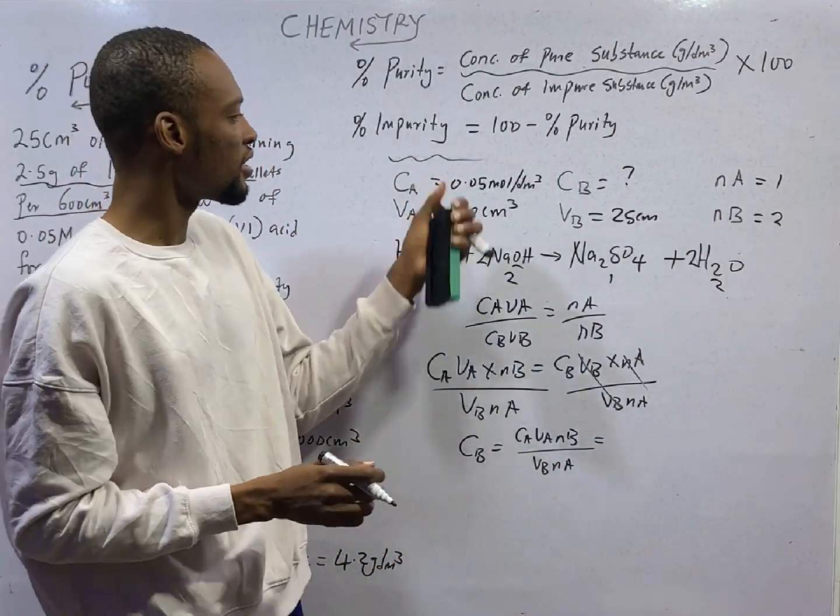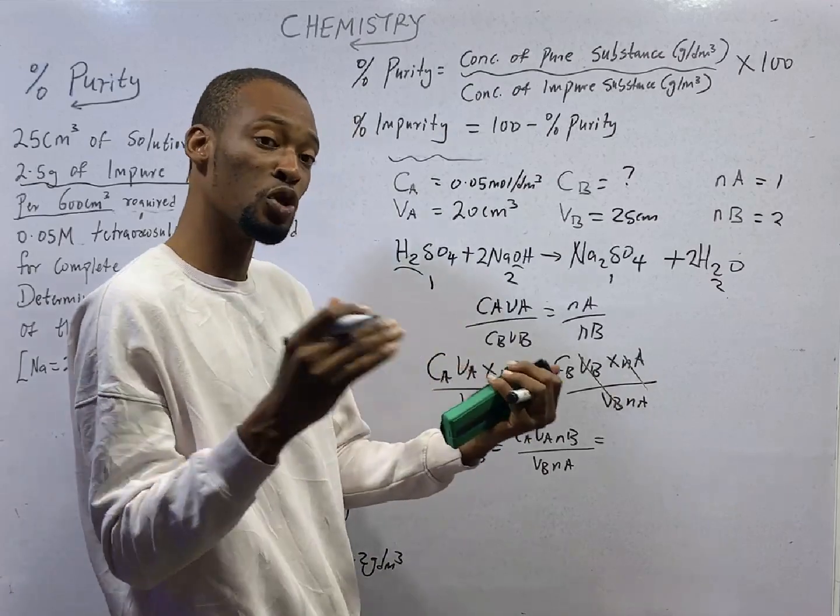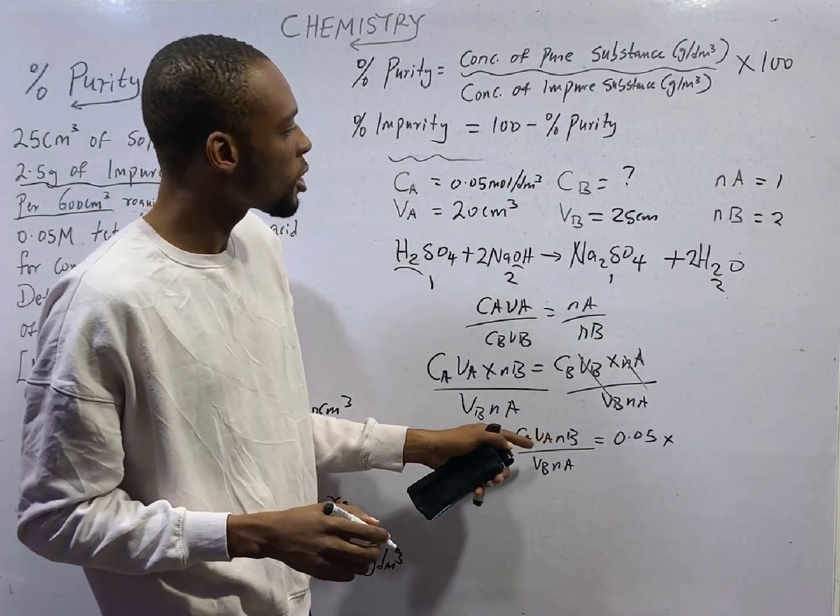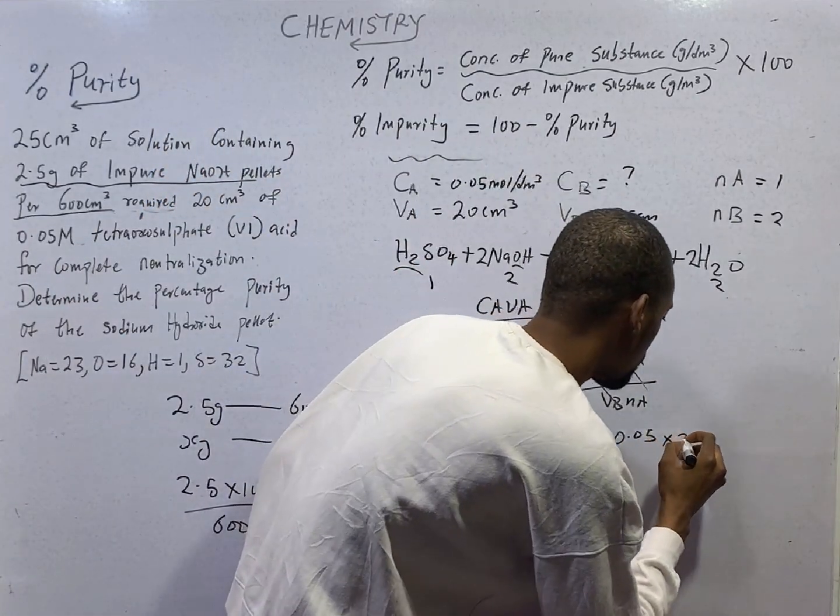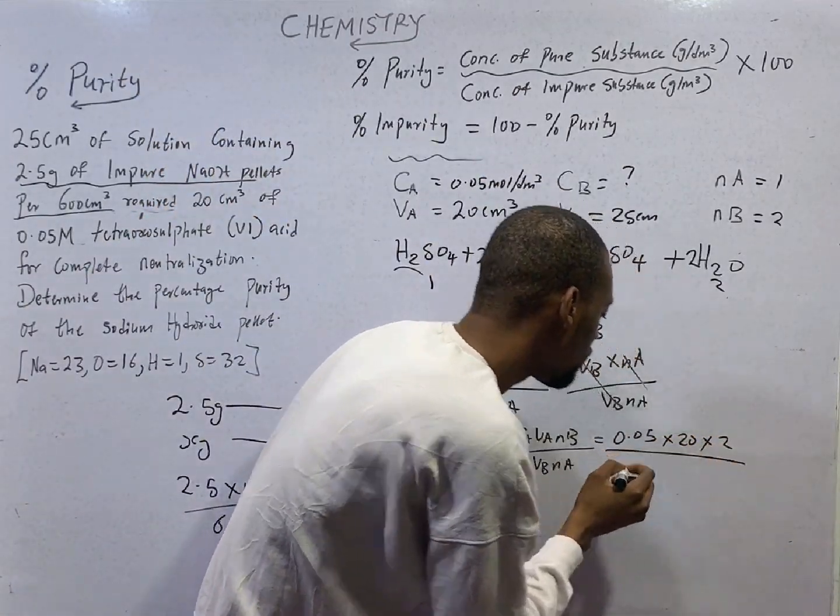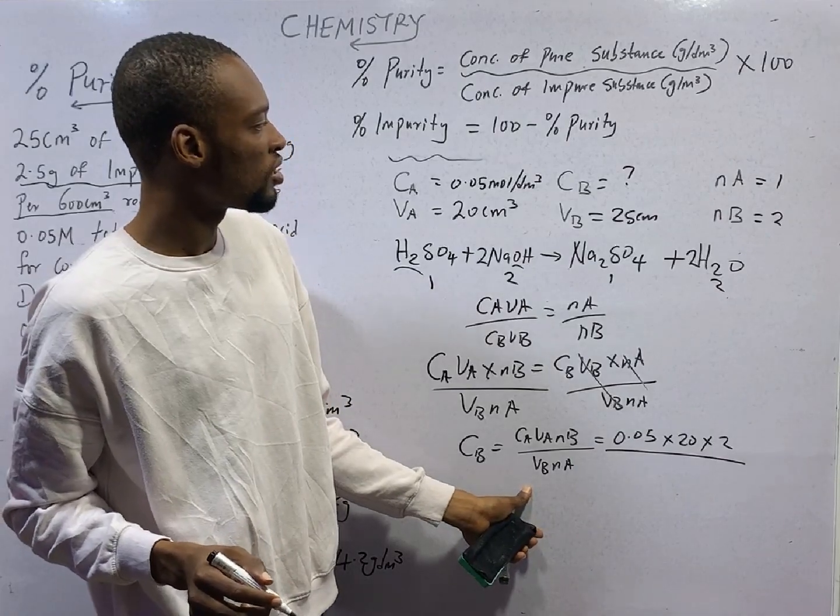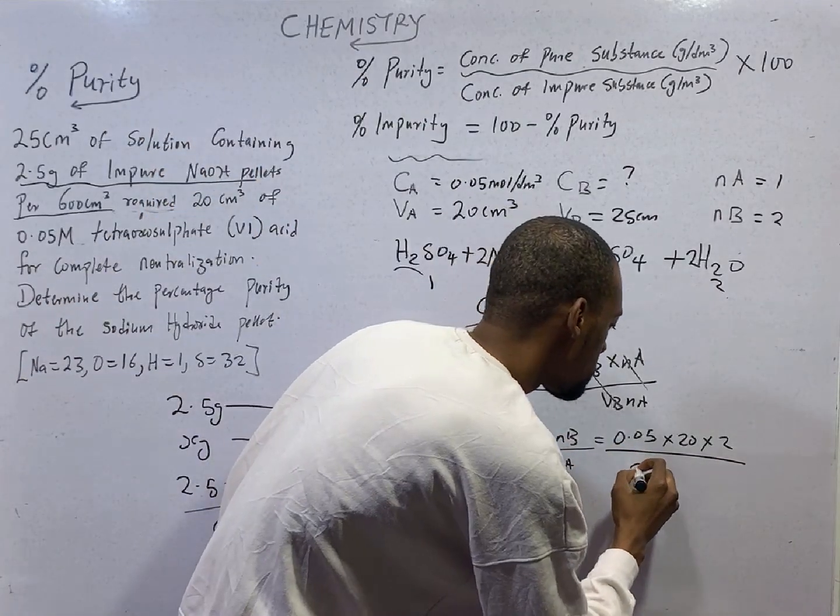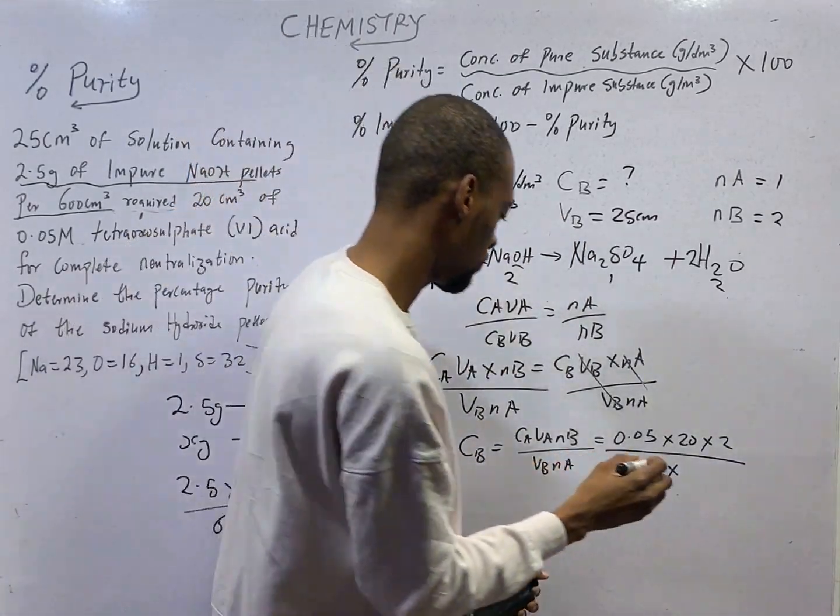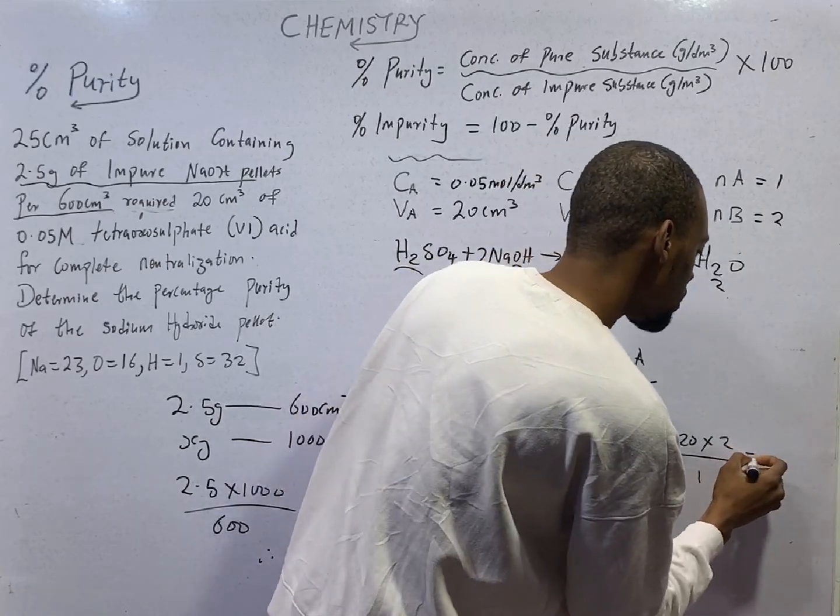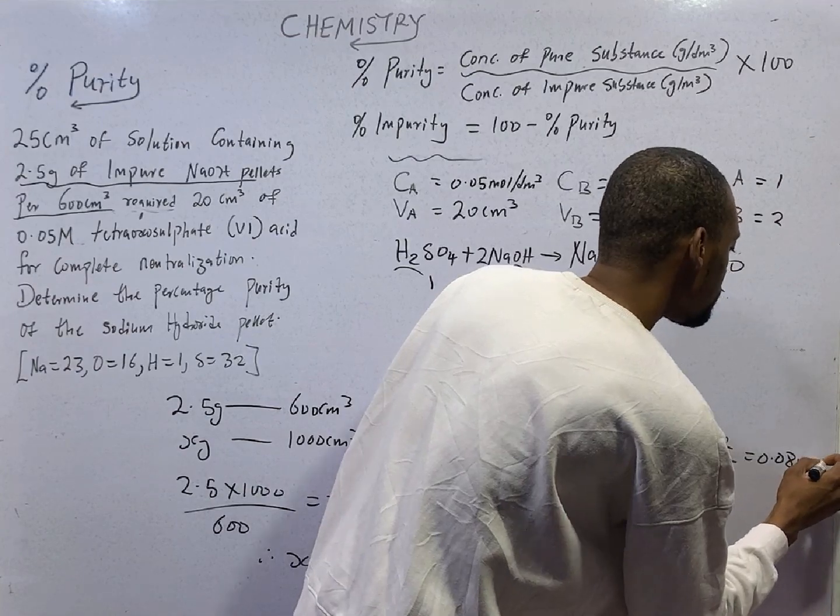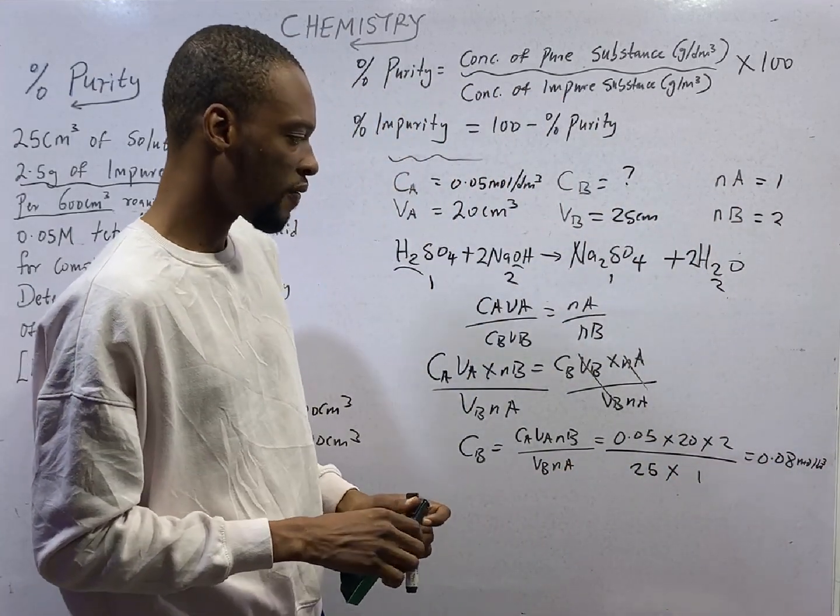Substituting CA is 0.05 moles per dm³, times VA 20, times NB 2, all over VB 25, times NA 1. This will give you 0.08 moles per dm³. This is the concentration of the base.